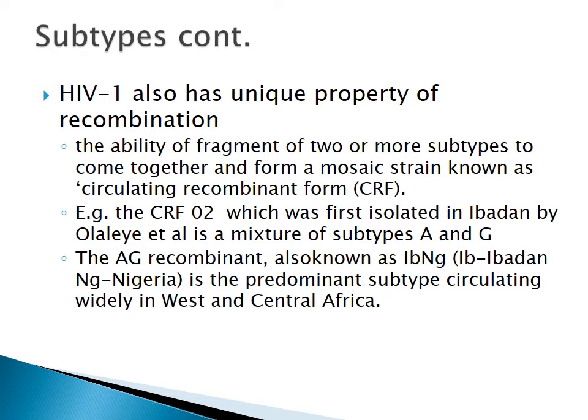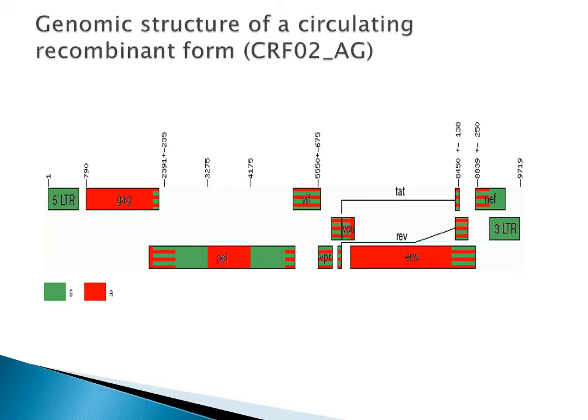The AG recombinant is also known as IBNG — IB stands for Ibadan and NG for Nigerian — and has been shown to be the predominant subtype or recombinant form across West and Central Africa. The diagram of CRF02 shows the LTRs and the 5' and 3' ends are all G (green), while the red portions represent subtype A, illustrating how it combines fragments of two different viruses.